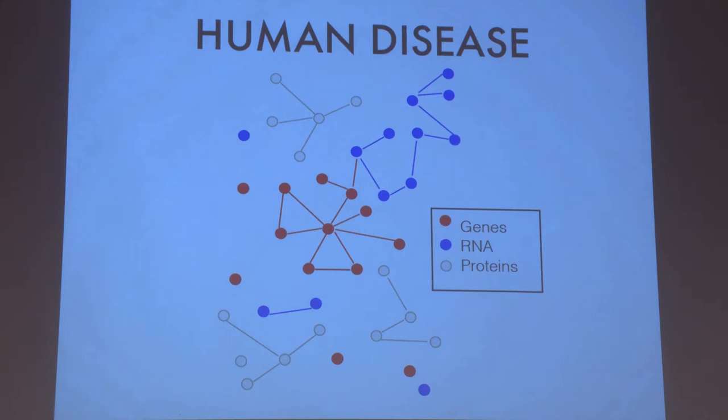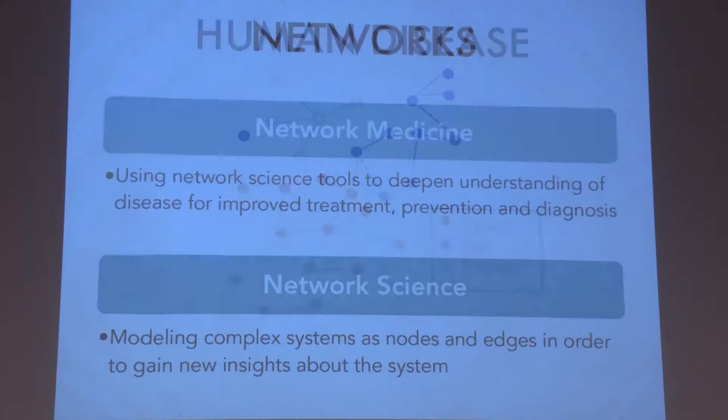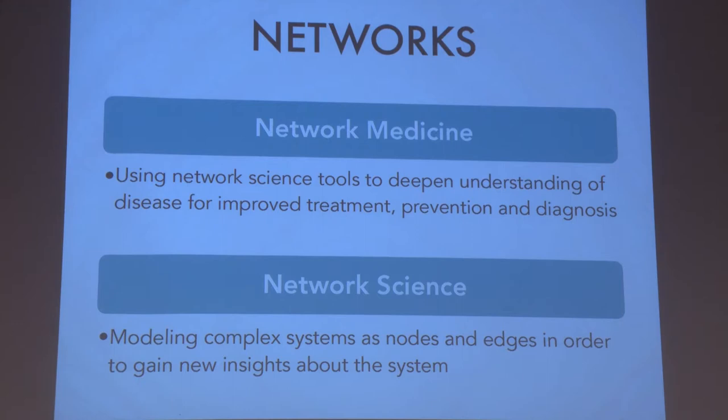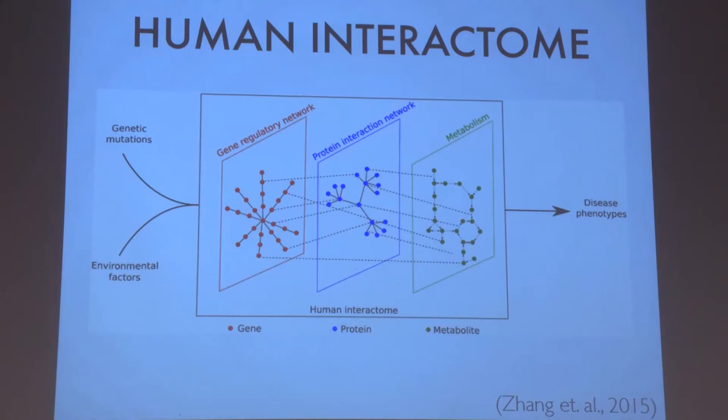More specifically, network medicine is an emerging field that uses the tools of network science to improve treatment, prevention, and diagnosis of diseases. The human interactome is a set of all molecular interactions in a cell at the level of genes, RNA, and proteins.